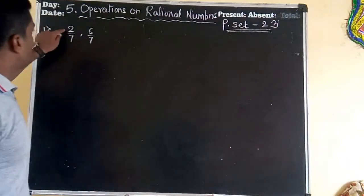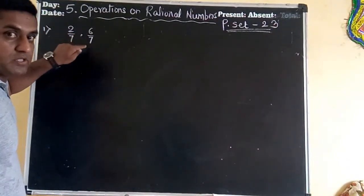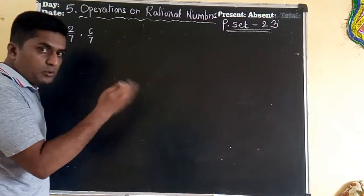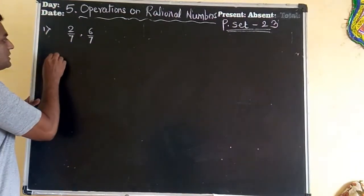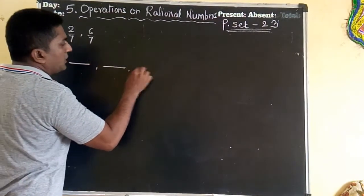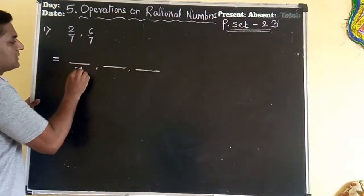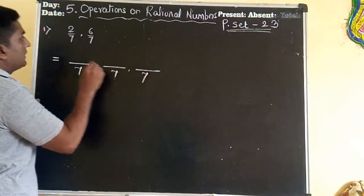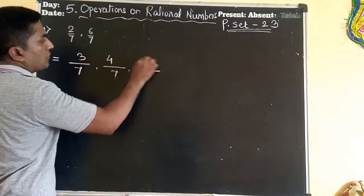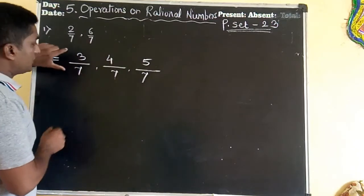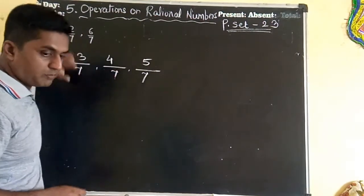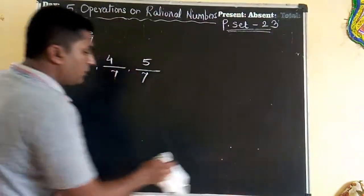The first question is 2 upon 7 and 6 upon 7. Here, the denominators are the same, so we don't have to do anything extra — it is very easy. When denominators are same, just write 3 fractions with 7 as denominator. After 2 comes 3, 4, 5. So your answer is 3 upon 7, 4 upon 7, 5 upon 7. This was question number 1.